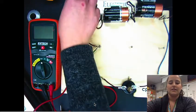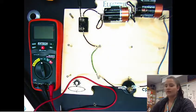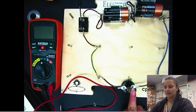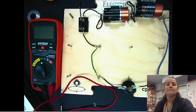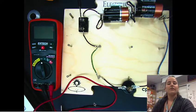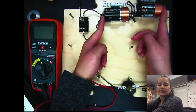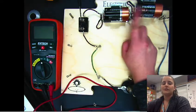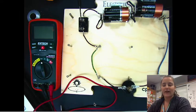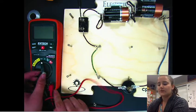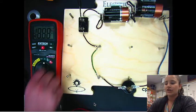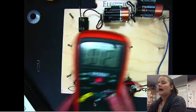So first I'm gonna measure the battery voltage. The battery voltage is the voltage across the batteries. I have 2D batteries here, they're both 1.5 volts, so I expect the voltage to be about 3 volts.